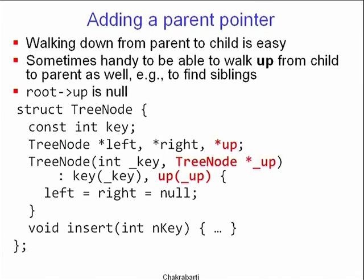So that is the binary search tree demo. You might also want to add a parent pointer — so far we have left and right child pointers, making it easy to walk down the tree. But for some purposes it may be handy to walk up from child to parent, for example to find sibling nodes. We can introduce a new field called 'up' which is another tree pointer, initialized while creating the tree node by passing the parent pointer as an argument.